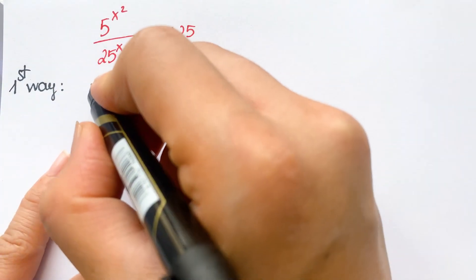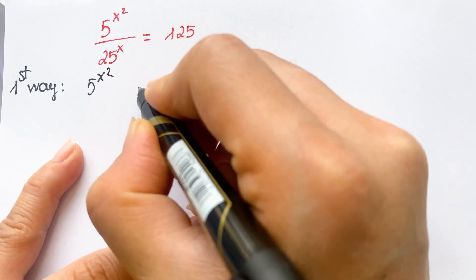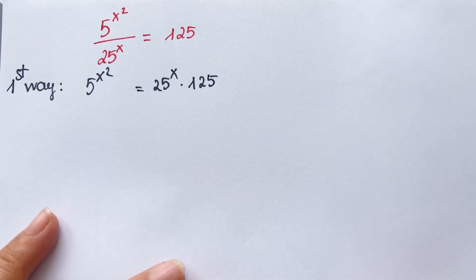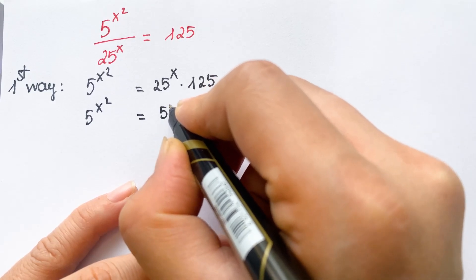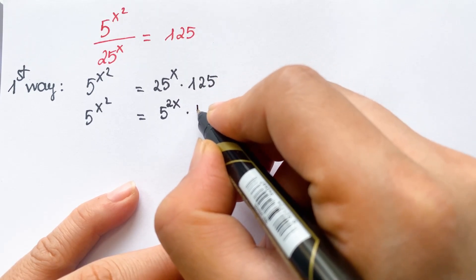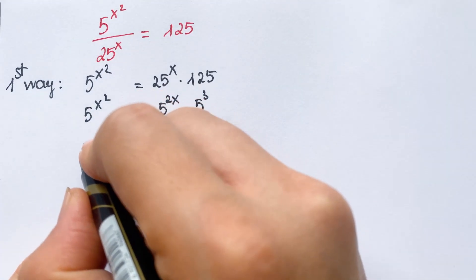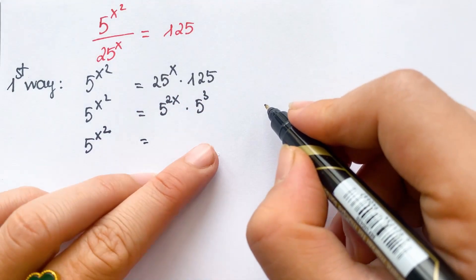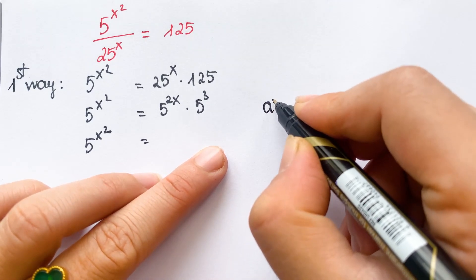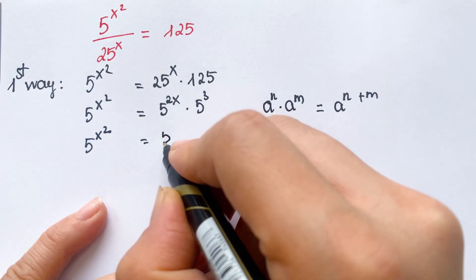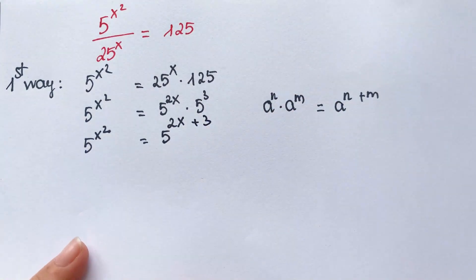For the first way, everyone can see: 5 power x squared equals 25 power x times 125. This is also equals 5 power x squared equals 5 squared times x and 5 cubed. So on the right-hand side, we apply the exponential rule: a power n times a power m equals a power n plus m. Therefore, we can write 5 power 2x plus 3.